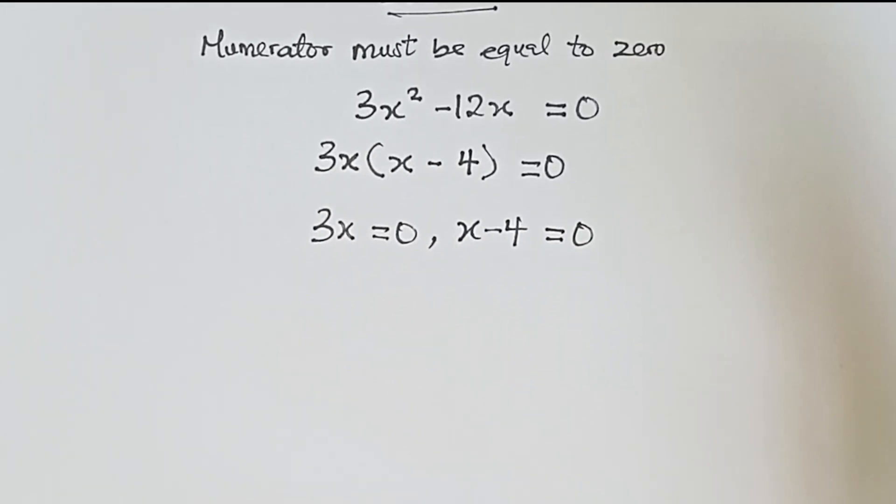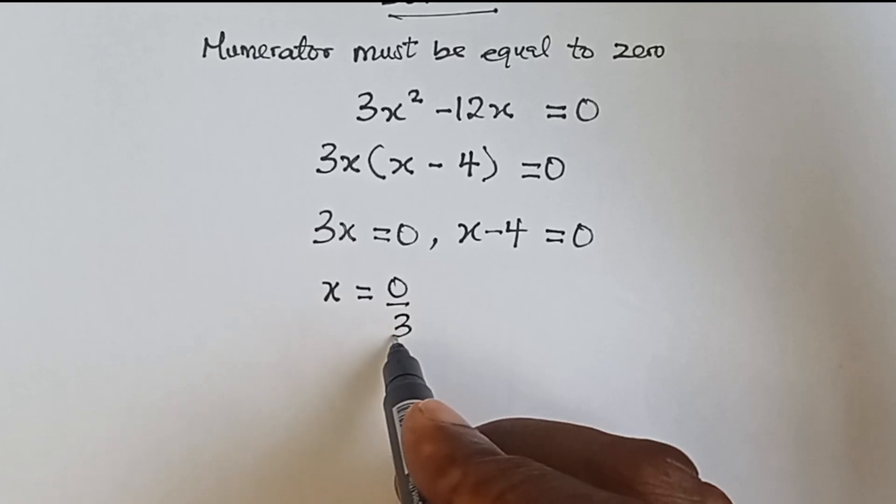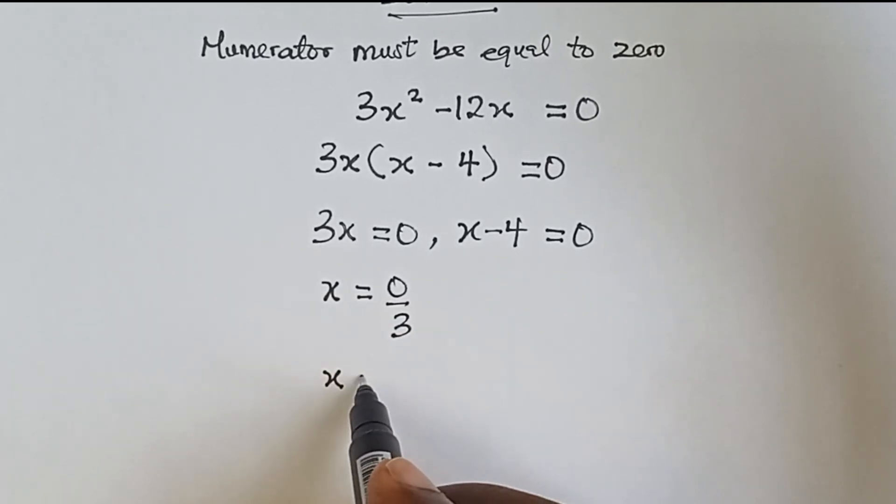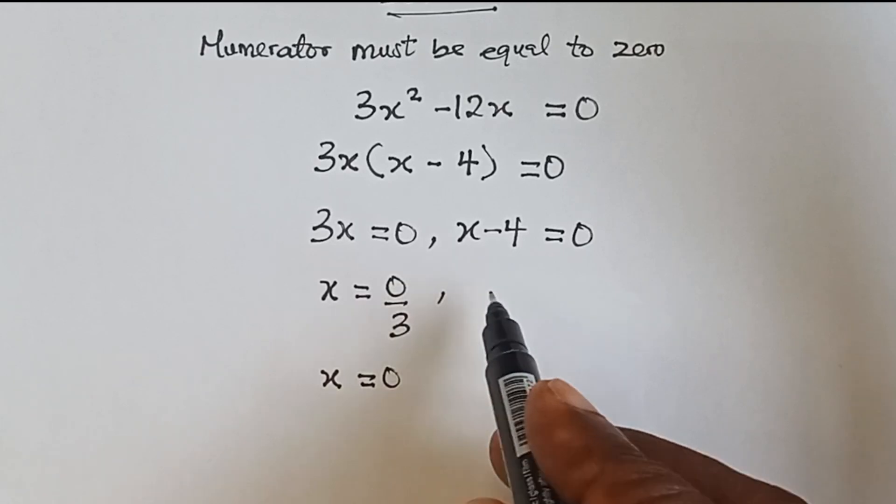So when we divide both sides by 3, we have x equals to zero divided by 3, and 0 over 3 is same to zero. So our x can be zero, and here we collect like terms.